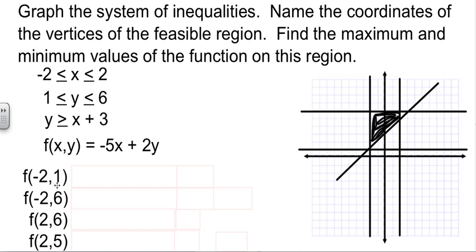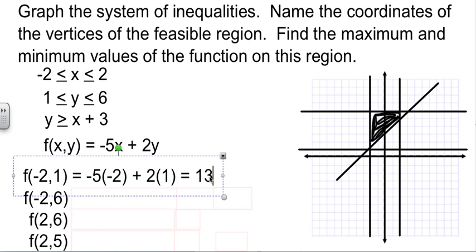Now, we just have to plug in negative 2, 1 into the function they gave us. You'll notice we didn't graph the function. The function doesn't get graphed. The function is what we plug into. So, I'm going to substitute in my negative 2 and my 1. Negative 5 times negative 2 is 10. 2 times 1 is 2. And some yahoo can't do his arithmetic. Because we all know that's 12, not 13. First mistake I ever made.